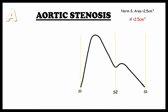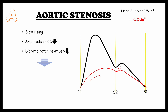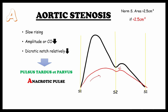Let's see what happens to the pulse during aortic stenosis. As you can see here, the pulse becomes slow-rising due to decreased amplitude or cardiac output. The dicrotic notch is also relatively smaller than normal. A pulse with these characteristics is called pulsus tardus et parvus, and it is also called anacrotic pulse. So A in the mnemonic stands for anacrotic pulse, and this is a valvular aortic stenosis.